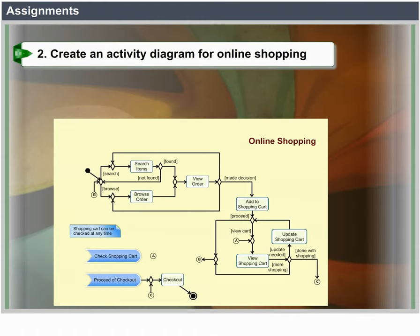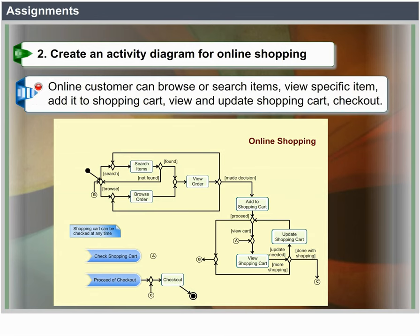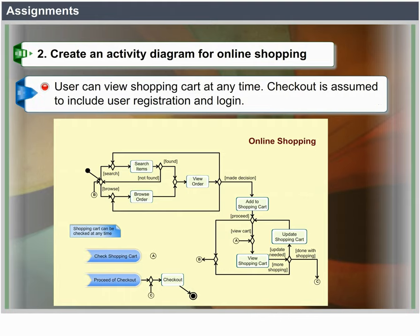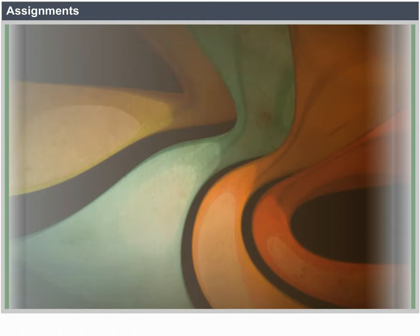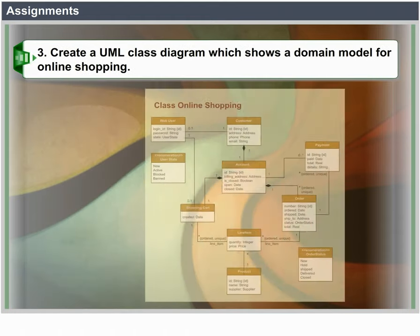Create an activity diagram for online shopping. An online customer can browse or search items, view a specific item, add it to the shopping cart, view and update the shopping cart, and checkout. The user can view the shopping cart at any time. Checkout is assumed to include user registration and login.